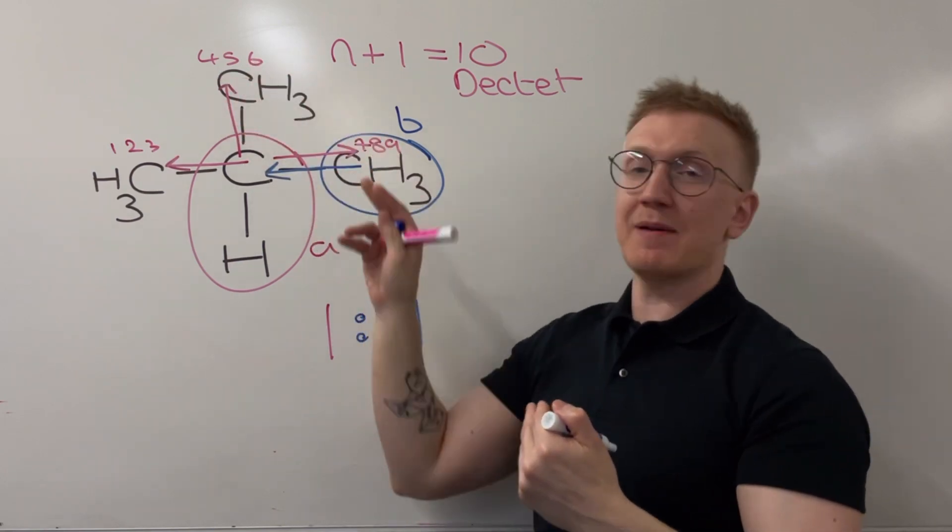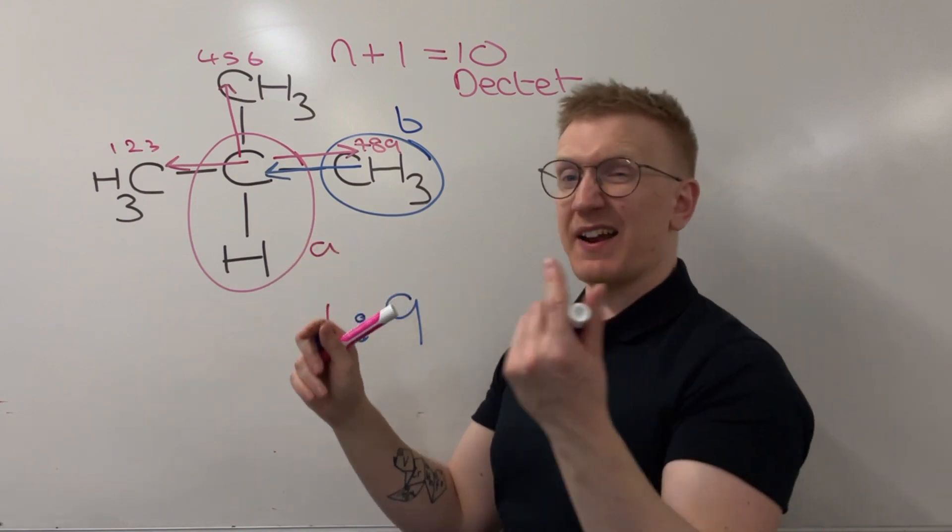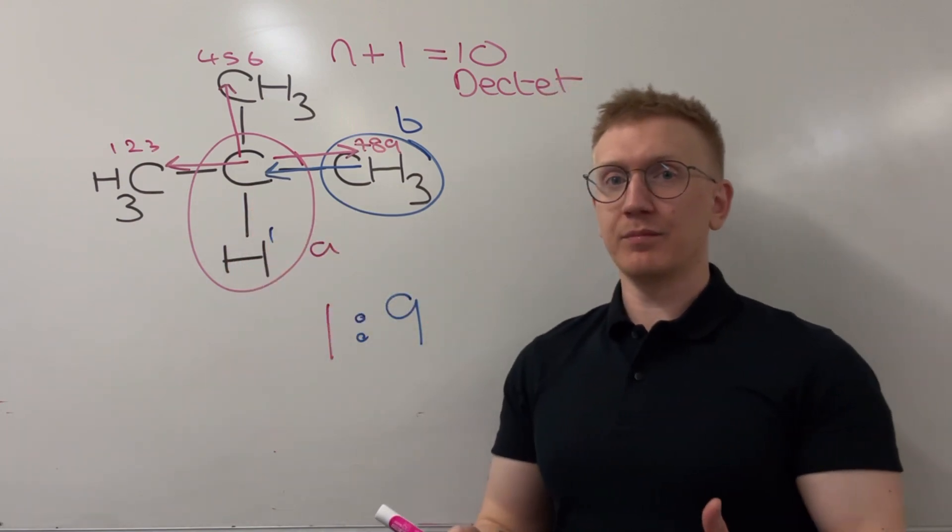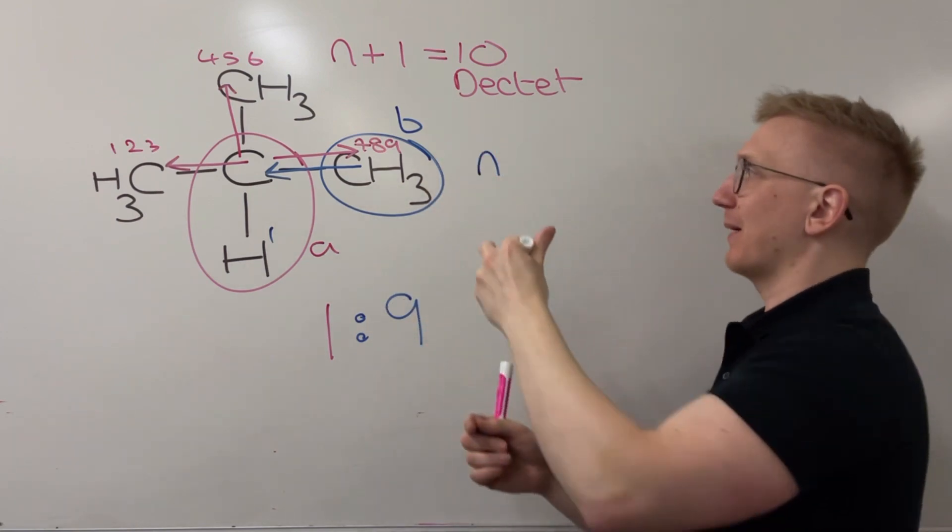And besides, these are the same environment to begin with. So I go up to that next carbon and I see how many hydrogens are there. I've just got the one this time. But we don't need to worry, that still means something to us. Nothing would still mean something in terms of a splitting pattern.